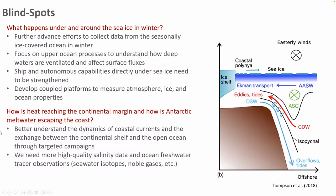The second blind spot is the coastal region — we need to understand how heat is being transported from the open ocean to the coast, and how the freshwater released from the Antarctic continent is leaving the coastal region. For this we need high-quality salinity data and tracer observations such as isotopes or noble gases, to better understand how melting ice in Antarctica affects ocean circulation and therefore the freshwater, carbon, and heat budgets.